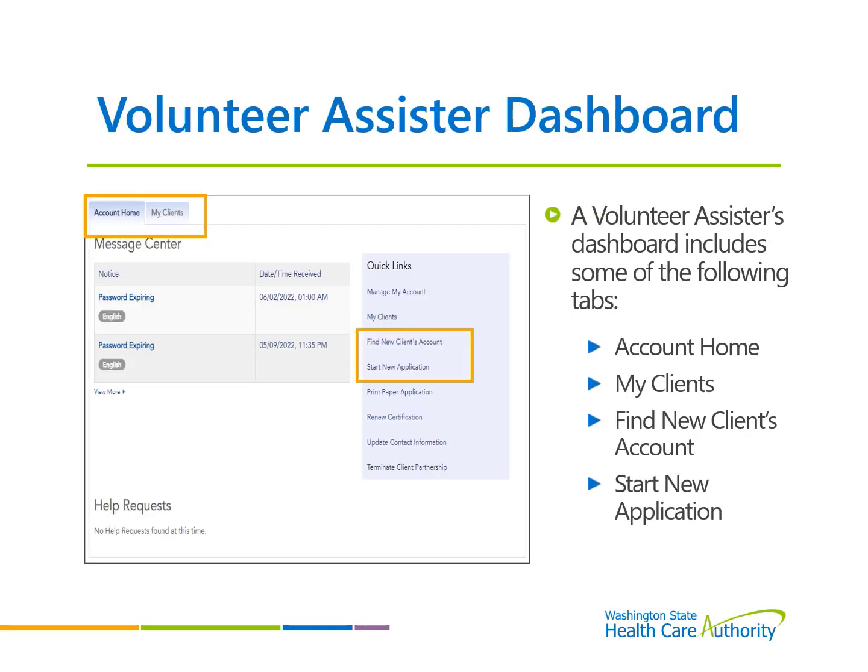After successful sign-in, you will be directed to the Volunteer Assister Dashboard with the main tabs Account Home and My Clients. On the right side are some quick links for navigating the dashboard, including the options to find a new client account and start a new application.